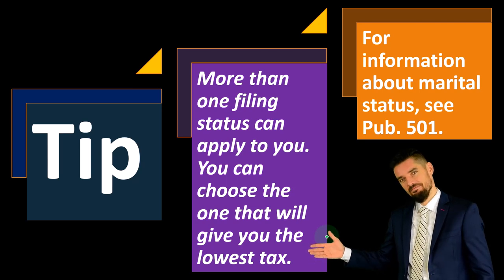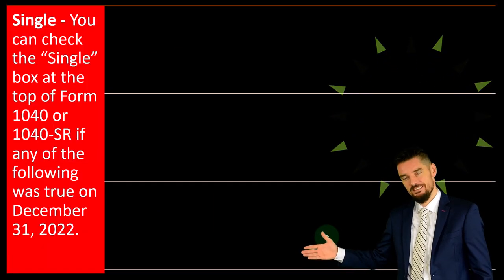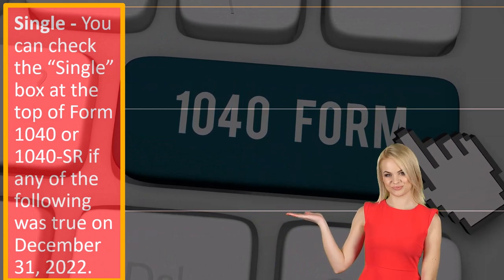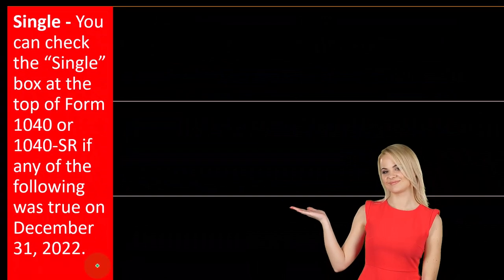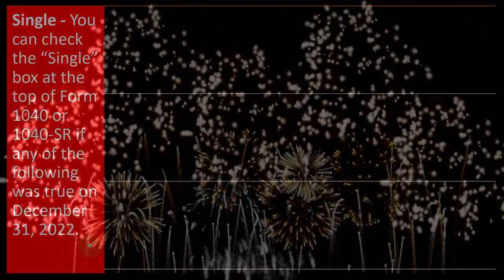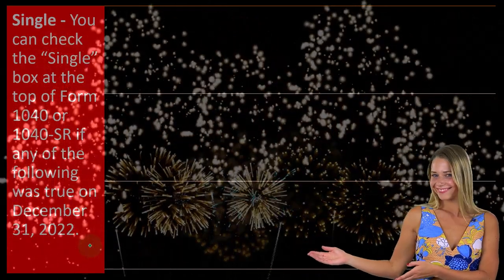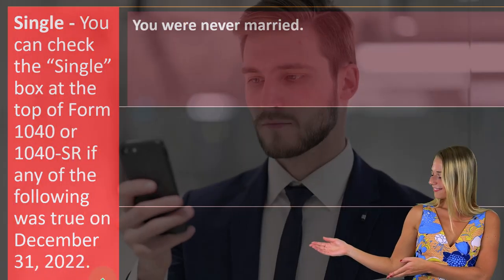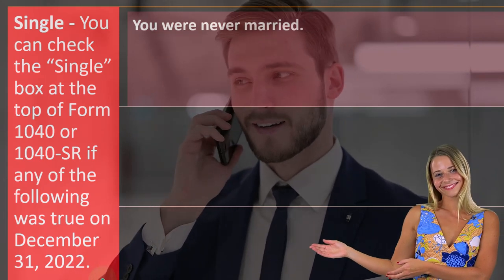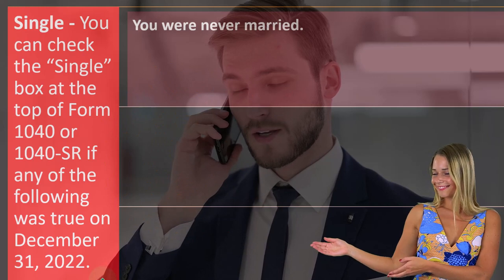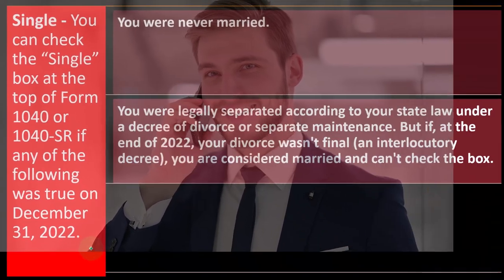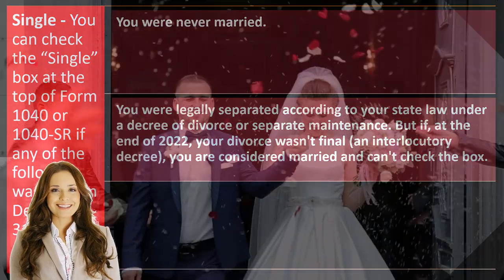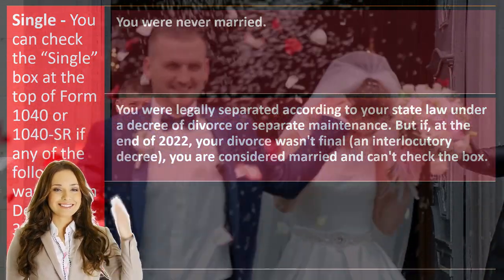For information about marital status, see Publication 501. For single status, you can check the single box on Form 1040 or 1040-SR if any of the following was true on December 31st, 2022 — note that date, the end of the year — because your status is determined as of year-end. For example, if someone got married any time during the year, what matters is their status on December 31st. If you got married on December 31st, 2022, you would be considered married for all of 2022. Note that getting married is a huge tax event.